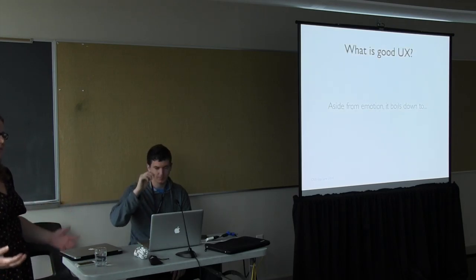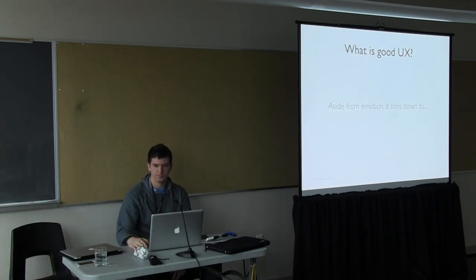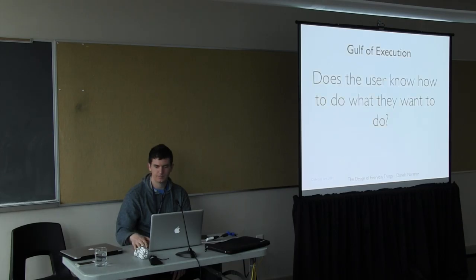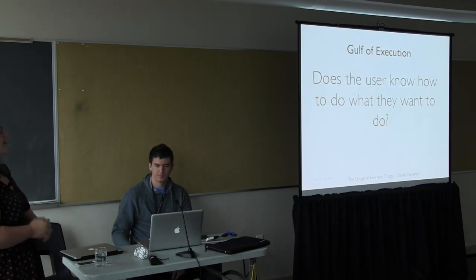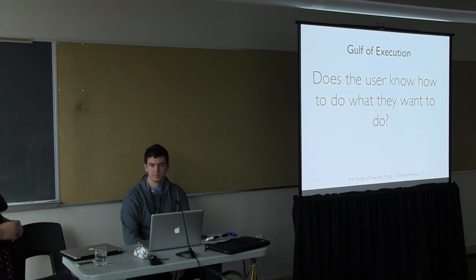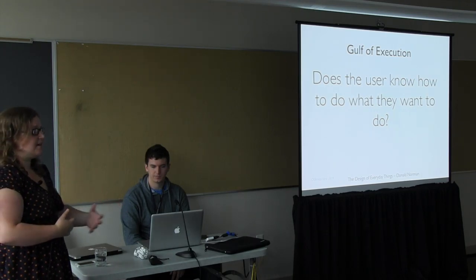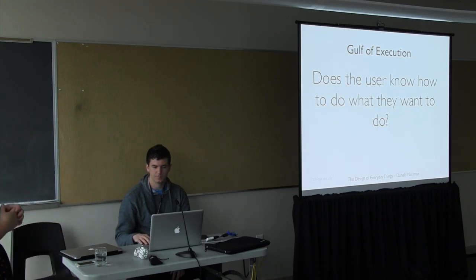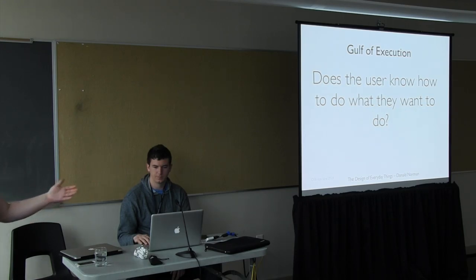So what is good user experience? Aside from emotion, it boils down to two questions. The first question is: does the user know how to do what they want to do? The user has a task in mind and wants to complete it — do they know the steps needed? This is called the gulf of execution: how big is that gap between knowing what they want to do and knowing how to do it in your system? In our Techno Activism Third Monday meetup, they downloaded MailVelope, which is an encrypted web mail system. They knew they wanted to send an encrypted email, but after downloading MailVelope they didn't know the next step, because there's no information within the app telling you what to do next.